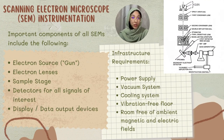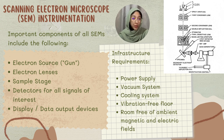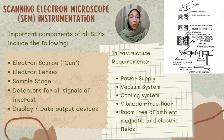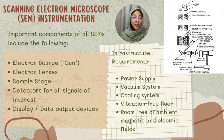The instrumentation of the scanning electron microscope includes the following important components: electron source (also known as gun), electron lenses, sample stage, detectors for all signals of interest, and display or data output devices. The infrastructure requirements include a power supply, vacuum system, cooling system, vibration-free floor, and a room free of ambient magnetic and electric fields.